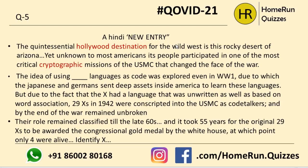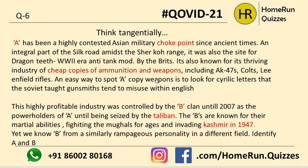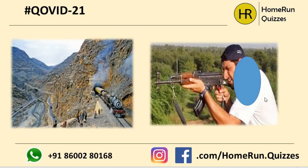Question number five: Hollywood destination, cryptographic, 29 X's in 1942. What I was looking for here was the Navajo code — that's why the clue 'Nav-Ao.' The Navajo was a tribe in the 1940s whose code was used for the U.S. Marine Corps. This is the famous Monument Valley or Navajo reservation. Question number six: highly contested Asian choke point, cheap ammunition. A was the one and only Khyber Pass. Khyber Pass copies are known as pretty dangerous ammunition — never touch them. The B clan I was looking for was none other than the Afridi clan, represented by Shahid Afridi. Answer: Khyber Pass and the Afridis.